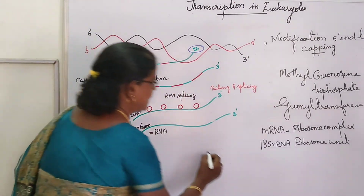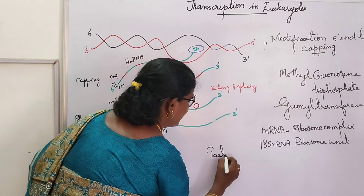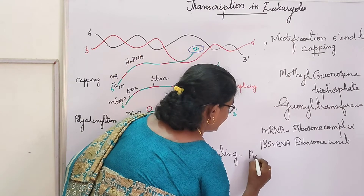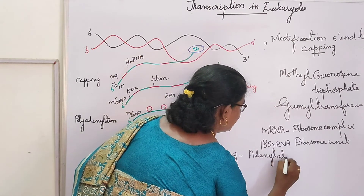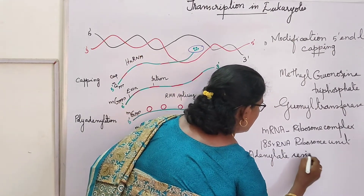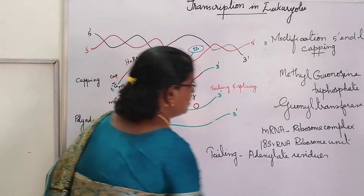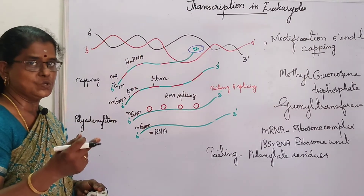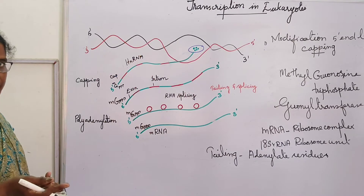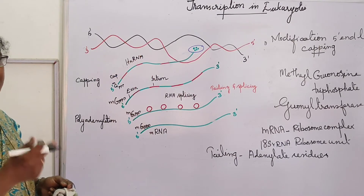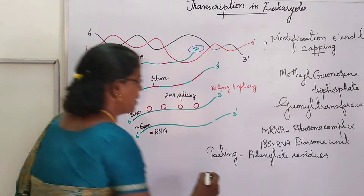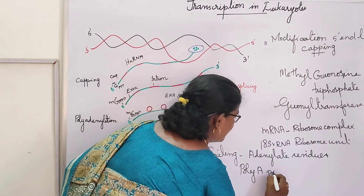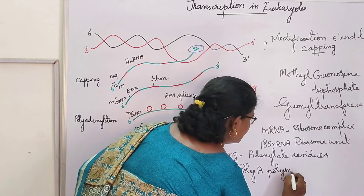The next step is tailing, which means adding adenylate residues at the 3'-end of HnRNA. This is catalyzed by poly-A polymerase enzyme.